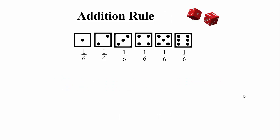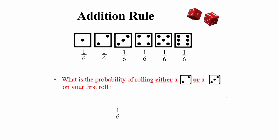Quick reminder on the addition rule. If you ask: what's the probability of rolling either a two or a three on a single roll? The probability of rolling a two is one-sixth, and rolling a three is one-sixth. Since either outcome satisfies the question, you add: one-sixth plus one-sixth equals two-sixths, or one-third. Quality control check: this answer should be greater than either component, because it's easier to satisfy the condition with two options than just one.